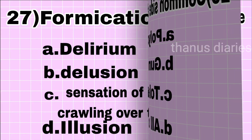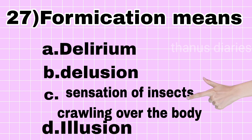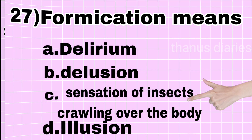Next question: formication means — delirium, delusion, sensation of insects crawling over the body, or illusion? The answer is sensation of insects crawling over the body, known as formication.